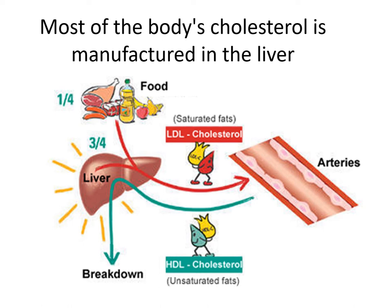Most of the body's cholesterol is manufactured in the liver. About 85% of your blood cholesterol level is endogenous — produced by your own body. The other 15 to 25% comes from your diet. Dietary cholesterol originates from foods like meat, poultry, fish, and seafood — especially shellfish, shrimp, crab, and lobster — and dairy products. It's possible to eat foods high in cholesterol and still have low blood cholesterol levels, and vice versa.